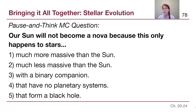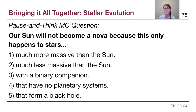Our sun is also not going to become a nova. When we discussed novae in the chapter 23 video, we talked about how that is when a white dwarf in a binary system gets a little bit of extra material and goes through a surface level of fusion. That only happens to stars that have a binary companion, and the sun does not.